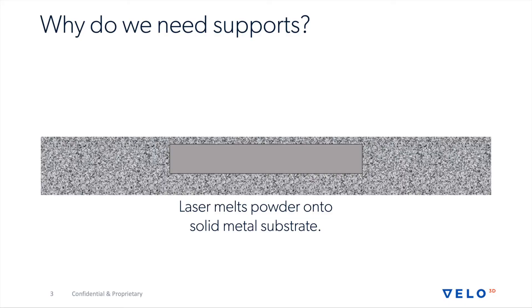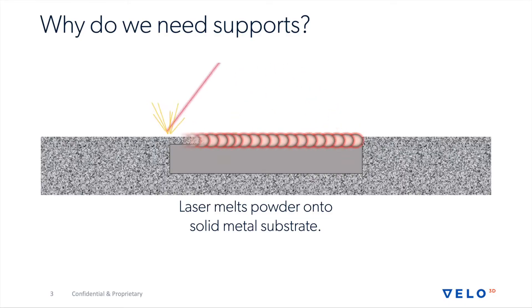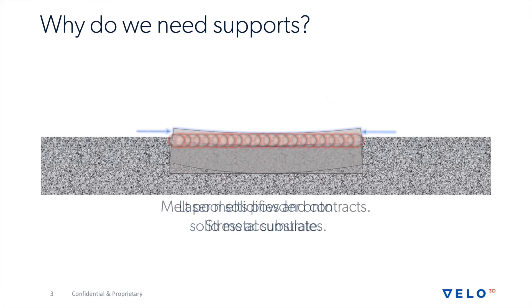So why do we need supports? Metal's hot — it cools and contracts. Each layer, the laser melts a thin layer of powder onto the substrate. This cools and contracts and creates internal stresses which propagate during the build, and if left unchecked they can lead to process breakdowns.